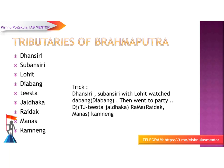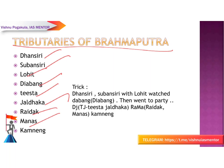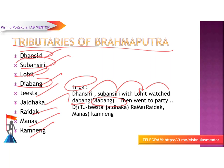Now the tributaries of Brahmaputra: Dhanshiri, Subhansiri, Lohit, Dibang, Tista, Jaldaka, Raidak, Manas, and Kameng. The trick is a story: Dhanshiri and Subhansiri are sisters who, with their brother Lohit, go to watch the movie Dabangg — that is Dibang. After the movie they go to a party where the DJ name is Rama: T and J give Tista and Jaldaka, Ra gives Raidak, Ma gives Manas, and Kameng is the surname.